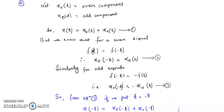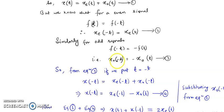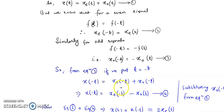Now if we replace t by minus t in equation 1, we can write X(-t) = Xe(-t) + Xo(-t). Since from equation 2 we found that Xe(-t) = Xe(t), we can substitute Xe(t) in place of Xe(-t).